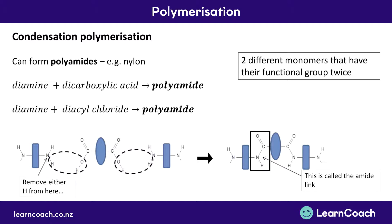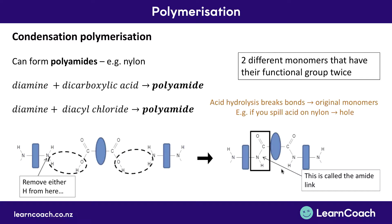One thing to note: if you ever spill an acid on nylon, you'll notice a big hole appears almost immediately. This is because of a reaction called acid hydrolysis, which we learned about in the last video. Acid hydrolysis will break up the amide link, putting the polymer back to those original monomers — the original molecules. So spilling acid on nylon creates a hole because it breaks up that long nylon polymer strand.